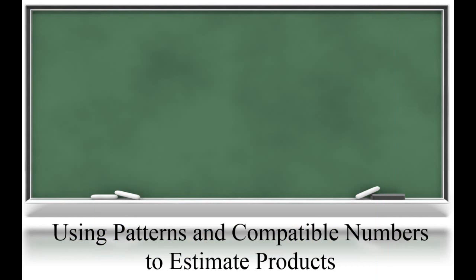Now, students are going to use this understanding of patterns to start to estimate products. We have 62 times 54. Remember, this unit students do not have the skills to multiply 62 times 54, but we do know how to estimate and how to use patterns to multiply. If we estimated, we know that 62 is close to 60, and 54 is close to 50.